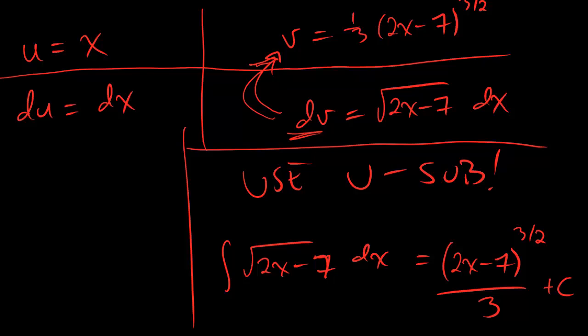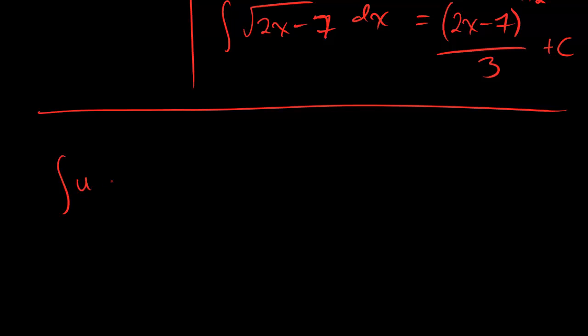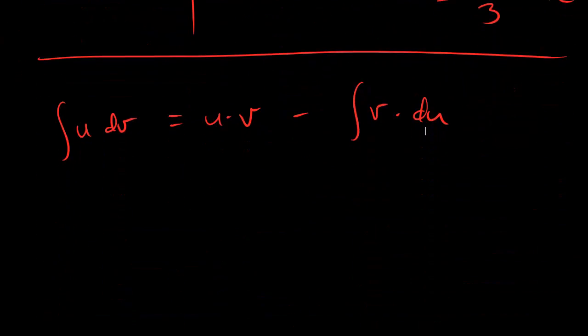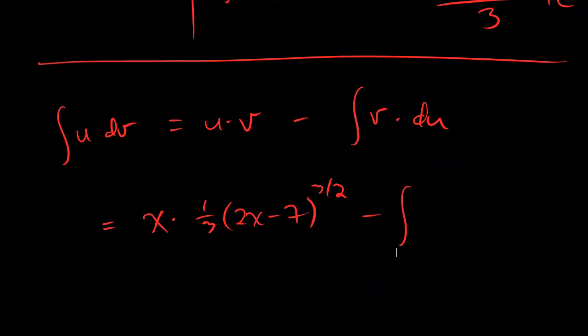Because we have this nice fancy chart, what we want to do is just plug it into the formula for integration by parts. And so, let's write that out. The formula looks like integral u dv equals u times v minus integral of v du. Now, if you go back up and check, u and v, those are easy enough to plug in. u is just x. v is 1 third 2x minus 7 to the 3 halves. And then we're going to minus the integral of v du. And that is just the integral of, well, du is just dx. That makes our lives a little bit easier. This is just 1 third, 2x minus 7 to the 3 halves dx. Alright, if you take the chart that we have and you plug it into the integration by parts formula, this is the result you should get.